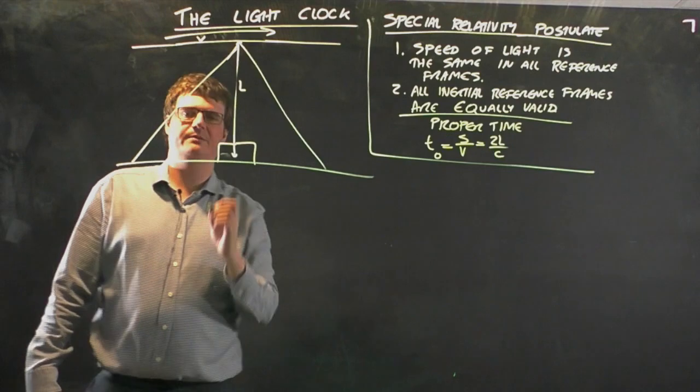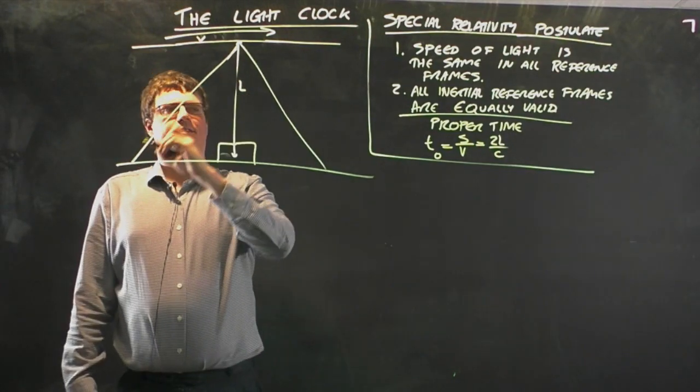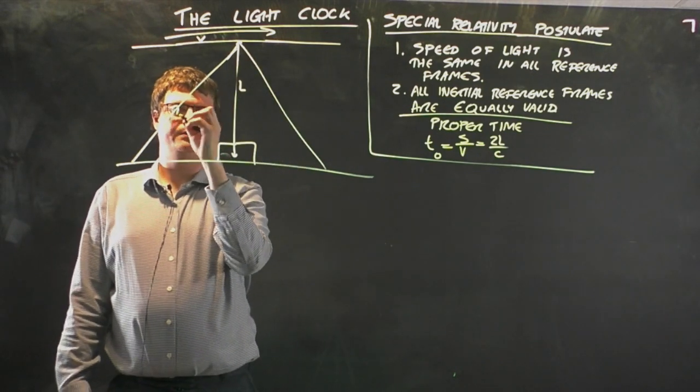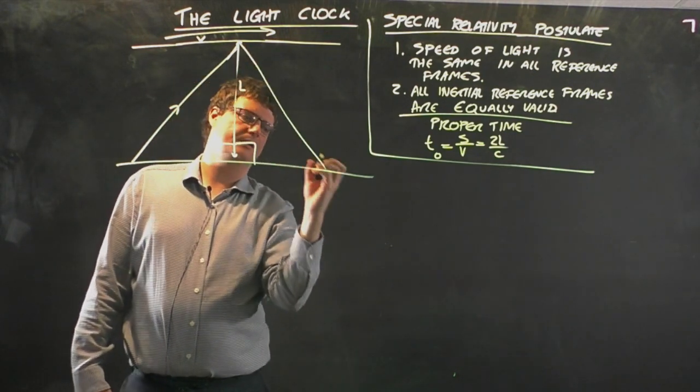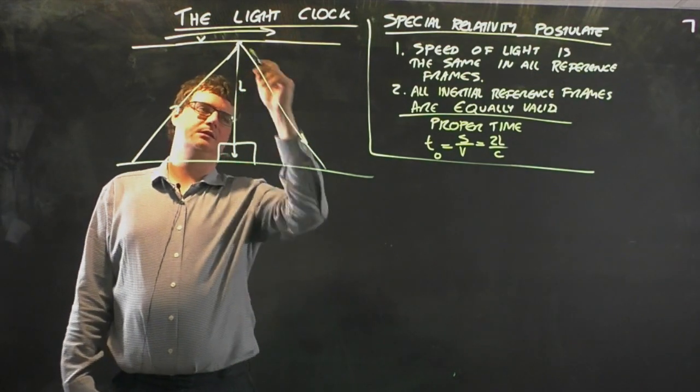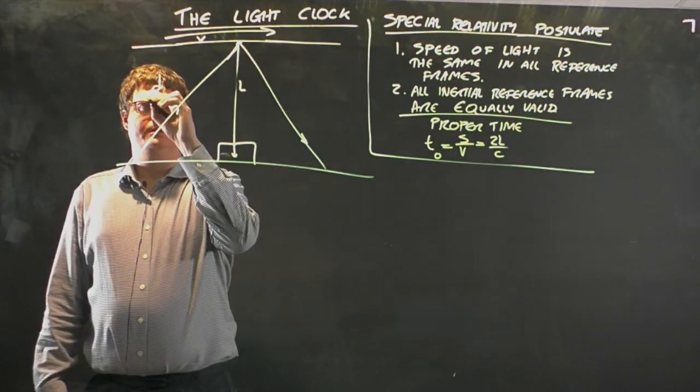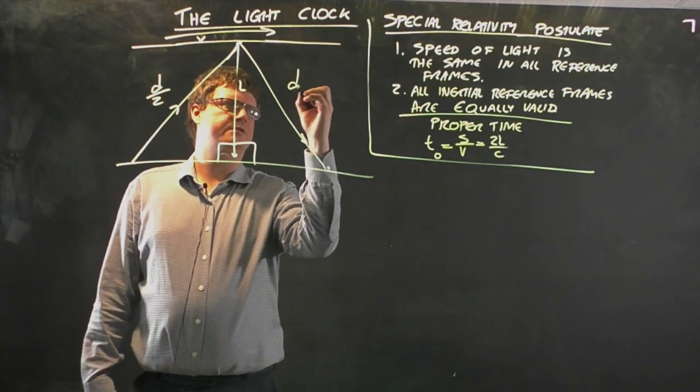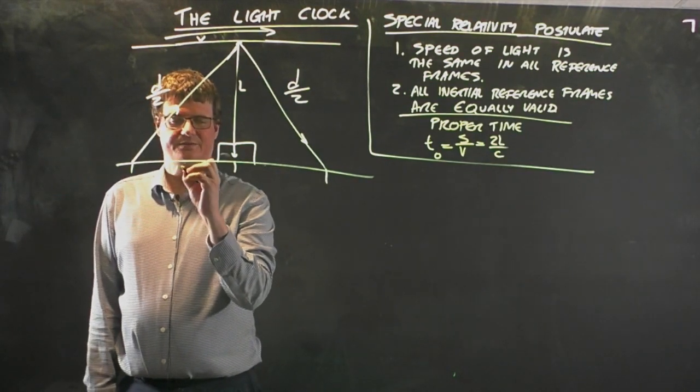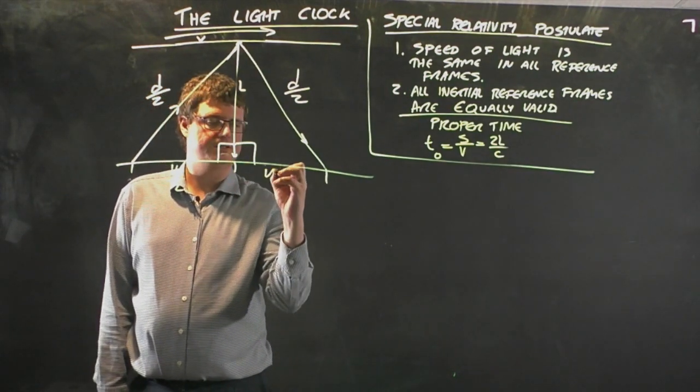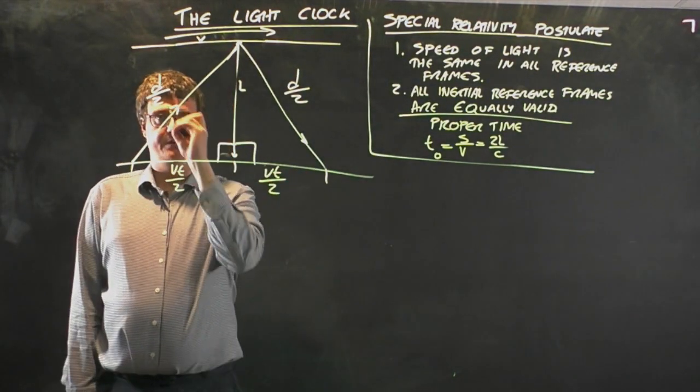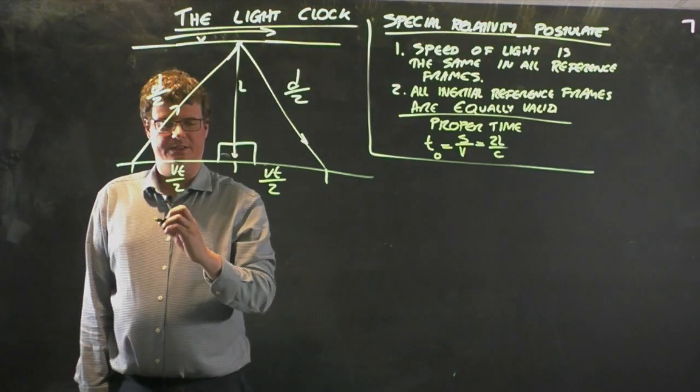These are right angle triangles, symmetric about this middle point, and the distance the light travels in total is this distance D. Let's call this distance D on 2, so the total distance the light travels is D. This distance is Vt on 2 and this distance is Vt on 2. The total distance there is Vt.